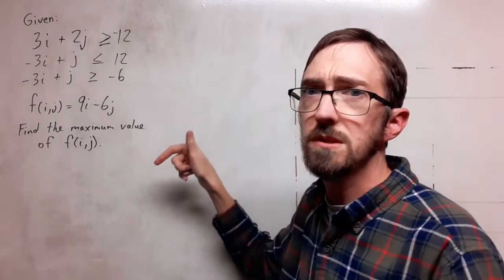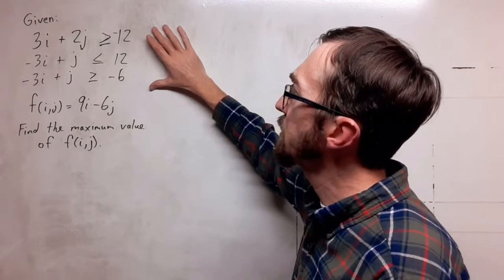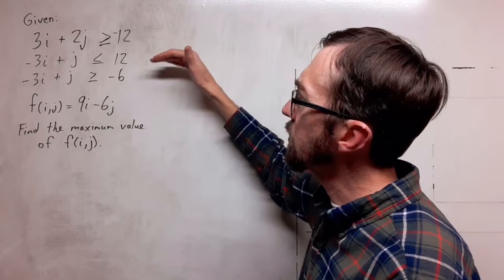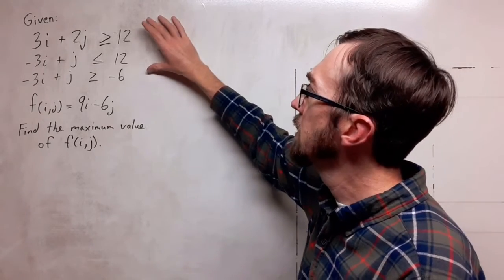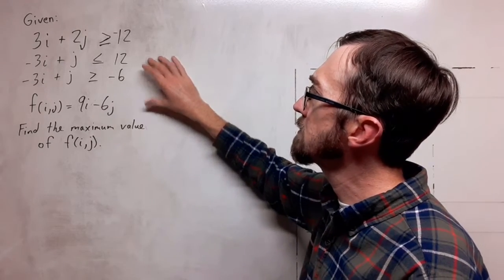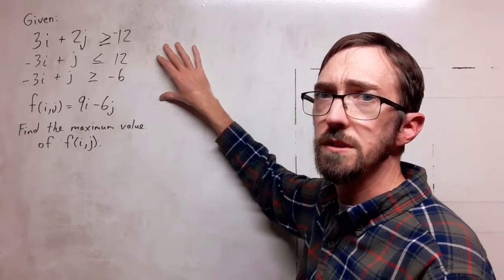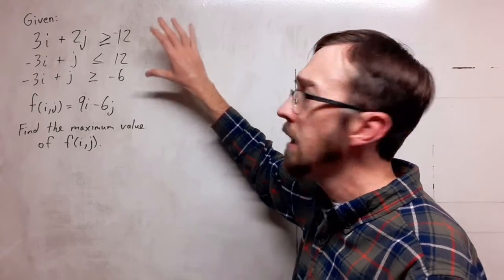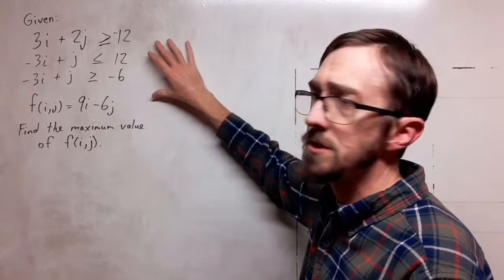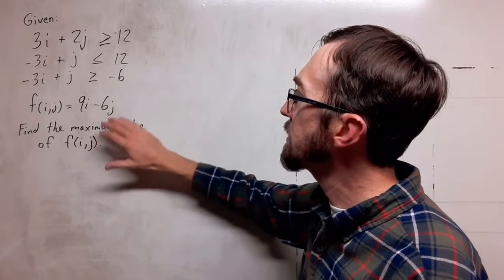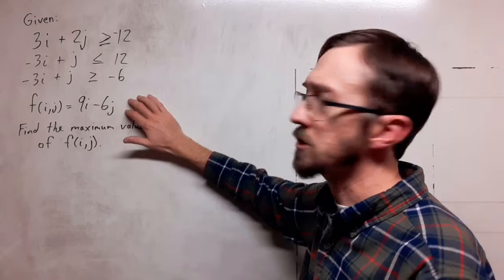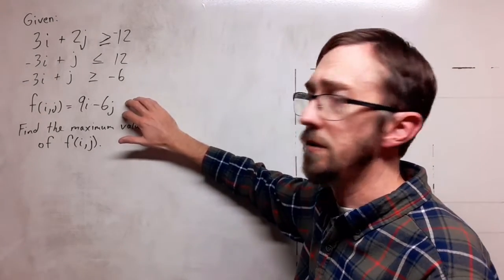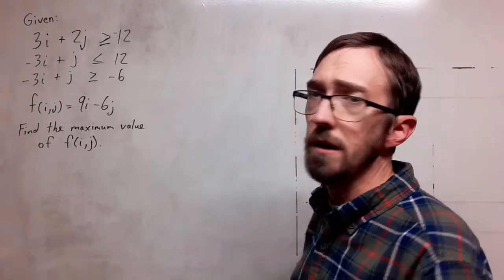Instead of using methods like substitution or elimination, I'm going to put groups of two of these into matrices, use reduced row echelon form, and find the intersection points. Those intersection points can be plugged into my constraint function, and the largest number that I get out of that will be the solution that I'm looking for.